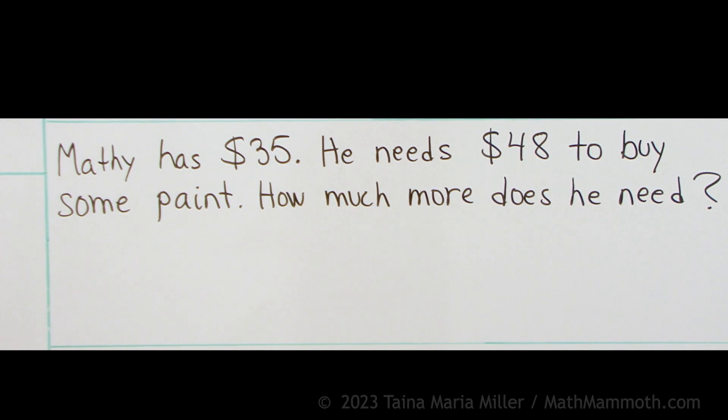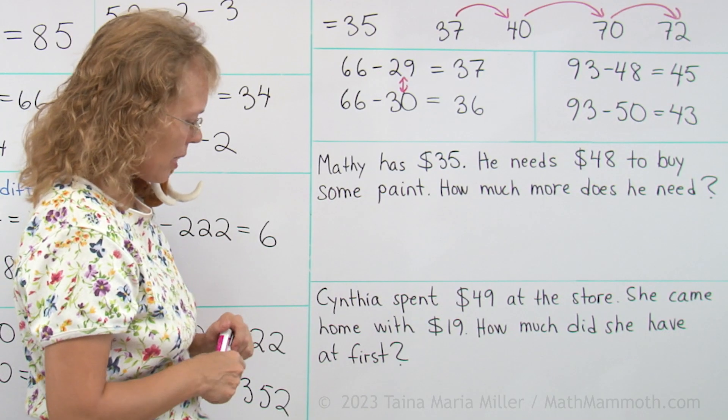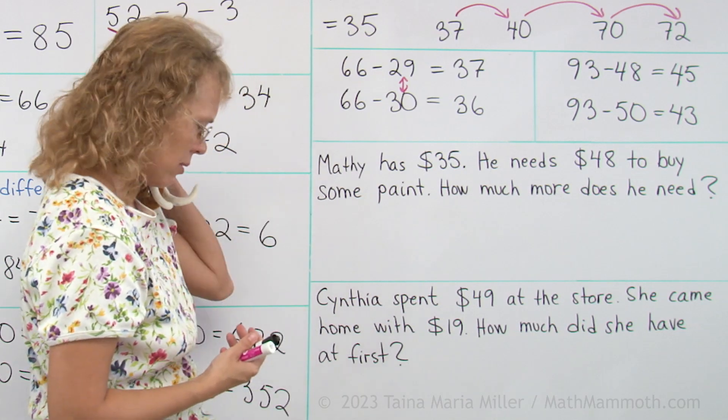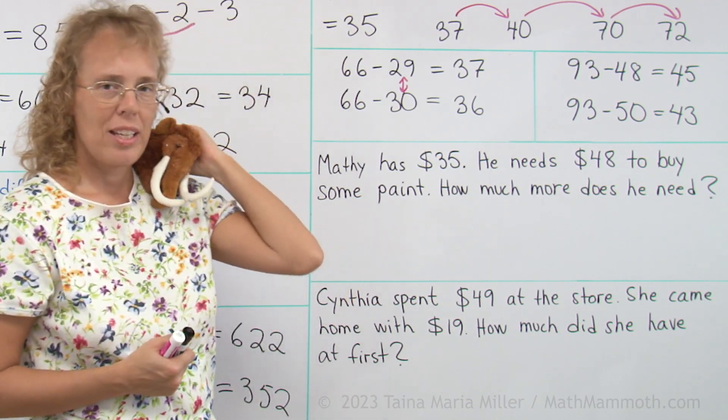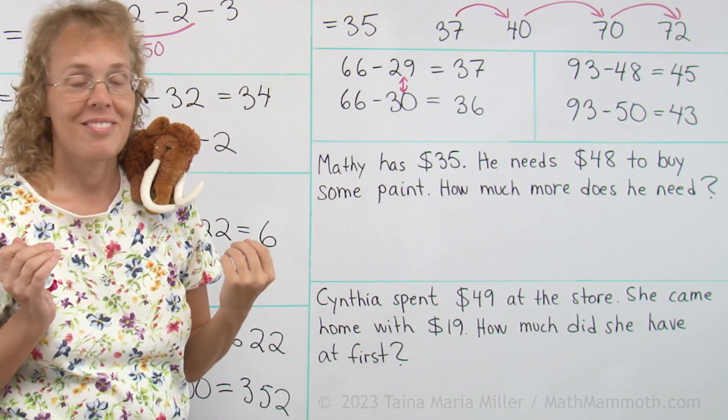Now Matthew has $35. He needs $48 to buy some paint. So he doesn't have enough money. How much more does he need? Well, Matthew, by the way, what do you need paint for? He wants to paint his room lovely purple. Imagine that.